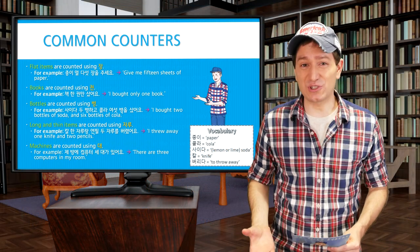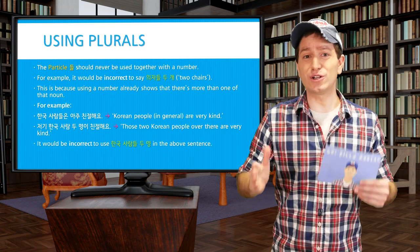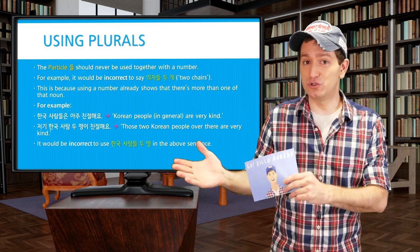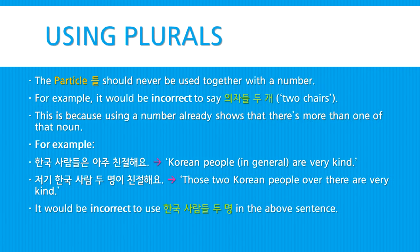So we've talked about numbers and some counters. Let's talk about using plurals. The particle 들 should never be used whenever you're using a number. For example, saying 의자들 두 개, meaning two chairs, would be incorrect, because using a number already shows that there's more than one of that noun, so 들 would be unnecessary. For example, you can say 한국 사람들은 아주 친절해요 — Korean people in general are very kind. But 저기 한국 사람 두 명이 친절해요 — Those two Korean people over there are very kind. It would be incorrect to use 한국 사람들 두 명 in that sentence.